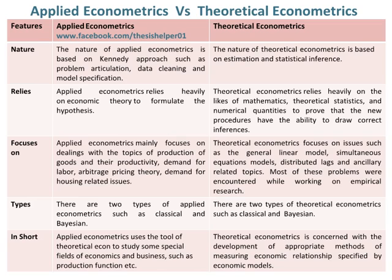In short, Applied Econometrics uses the tools of theoretical econometrics to study some special fields of economics and business, such as the production function, etc. Whereas, theoretical econometrics is concerned with the development of appropriate methods of measuring economic relationships specified by economic models.